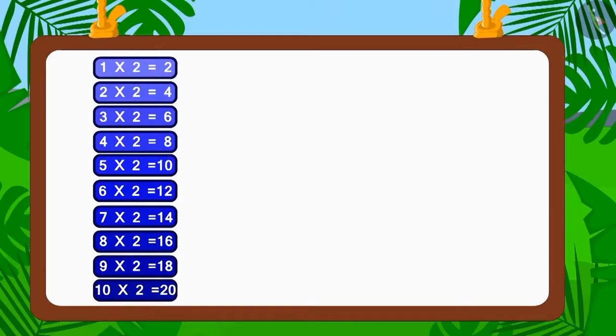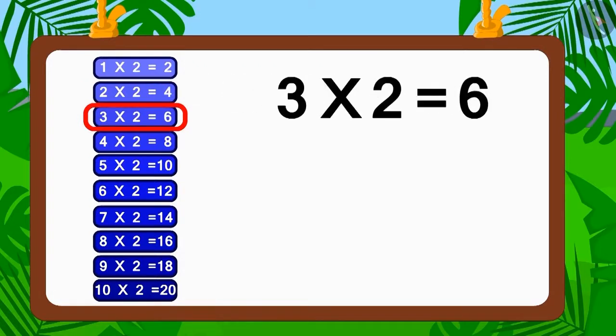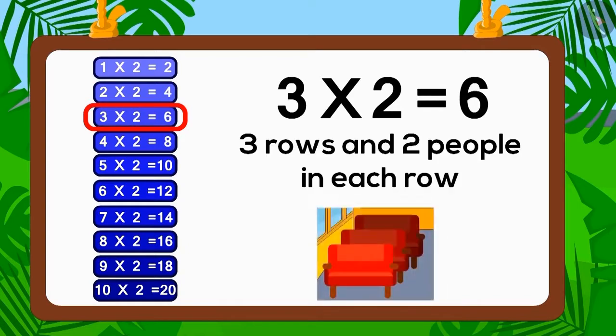Does the number six appear in the table of two? Yes, three times two is six. Therefore, two is the factor of six. So if two people sit in each of three rows, how many people would be able to sit? Six.